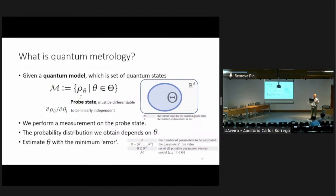These parameters belong to a set, capital theta. In the canonical case of quantum metrology, this set is a continuous set, not a discrete set, so you can take derivatives of rho-theta with respect to the parameter theta. The quantum model is defined as the set of all probe states parameterized by this theta vector.